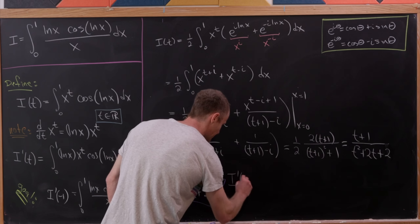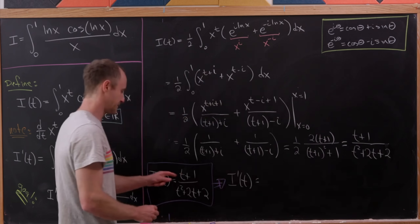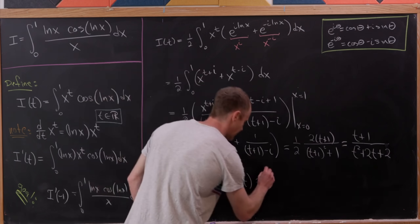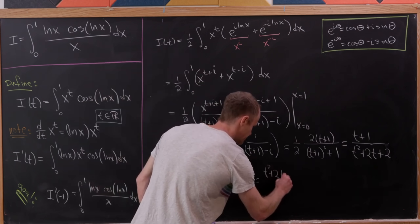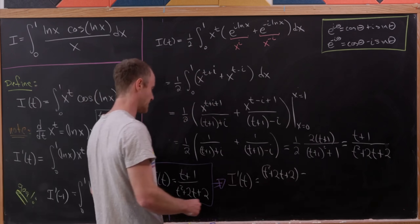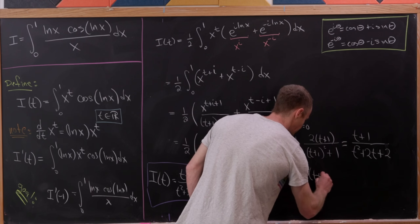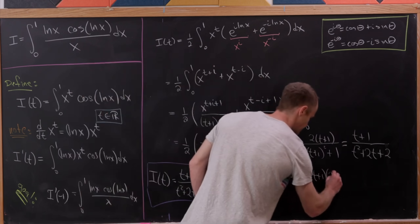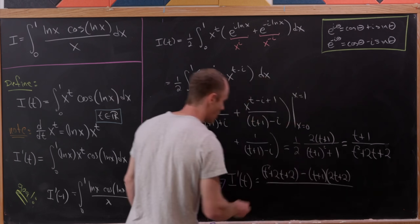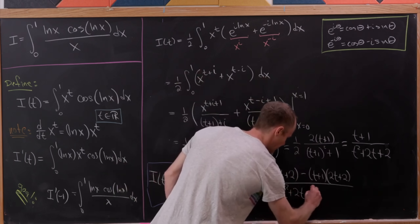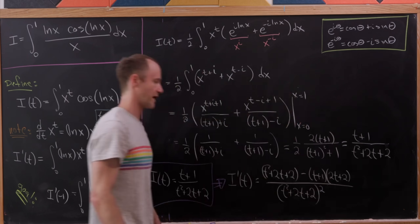Remember that what we really want is the derivative of that with respect to t evaluated at negative 1. So I′(t) using the quotient rule: we take the derivative of the numerator times the denominator — that's t squared plus 2t plus 2 — and subtract the numerator times the derivative of the denominator, which is t plus 1 times 2t plus 2, all over t squared plus 2t plus 2 quantity squared.